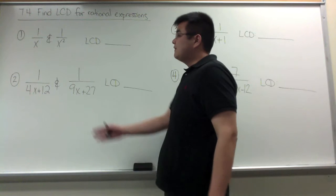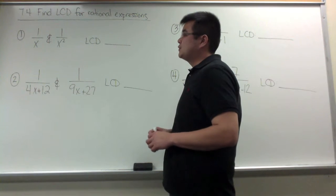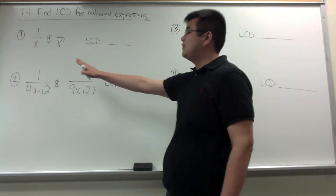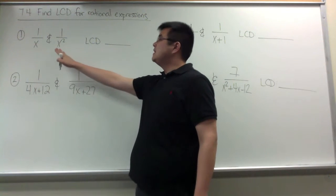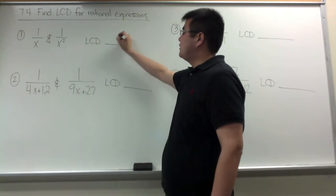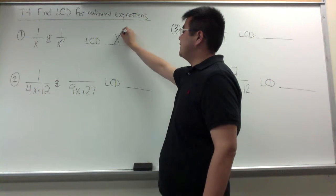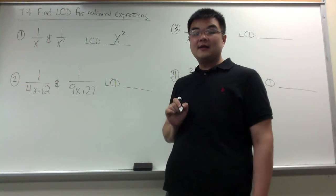In our first example we have 1 over x and 1 over x squared. The LCD between two monomials, if they have the same base, is the monomial with the highest exponent. So x squared would be the LCD.